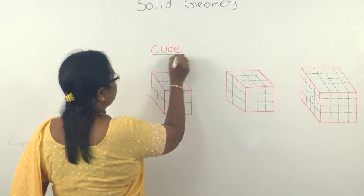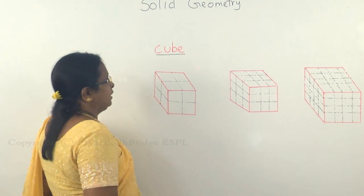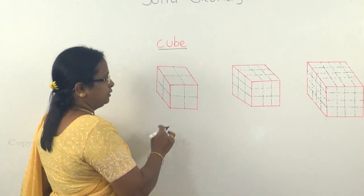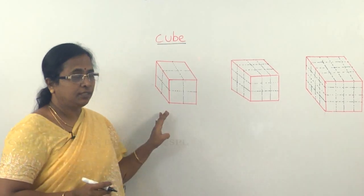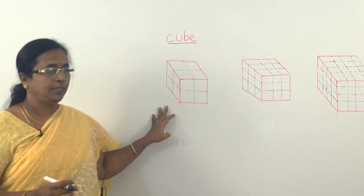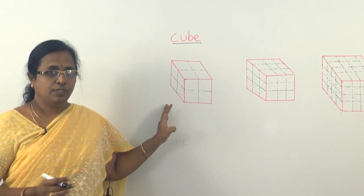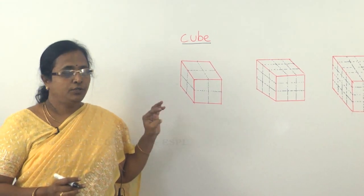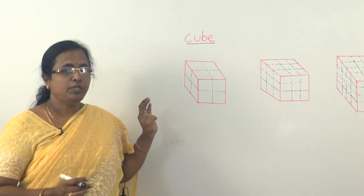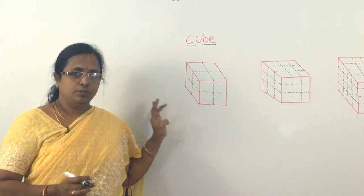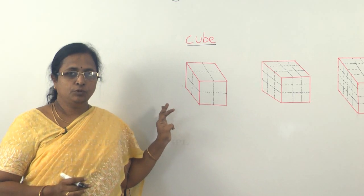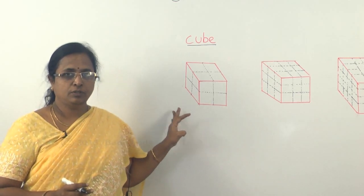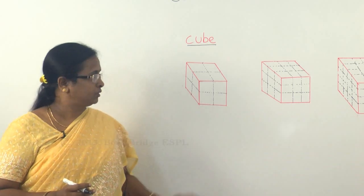Let's see about the cubes now. In the cubes, if all the sides are painted and then after painting you cut the cubes into smaller identical cubes, you have to find out how many of the smaller cubes are two-sided painted, three-sided painted, one-sided painted, or zero-sided painted.